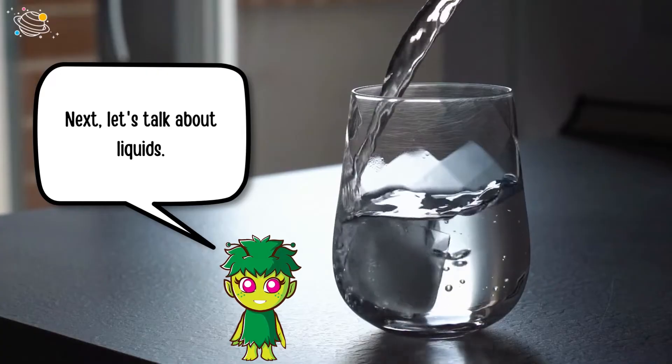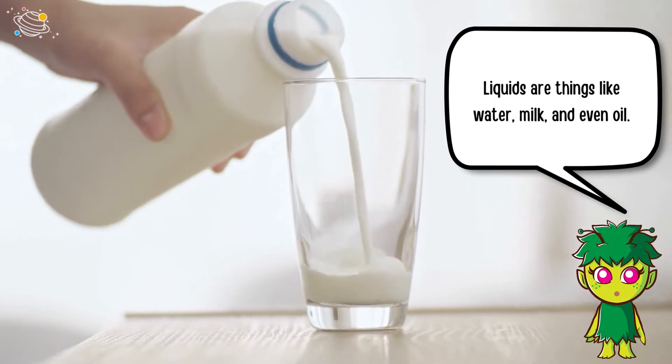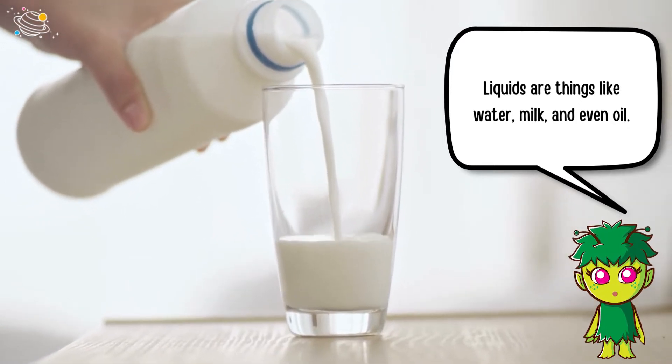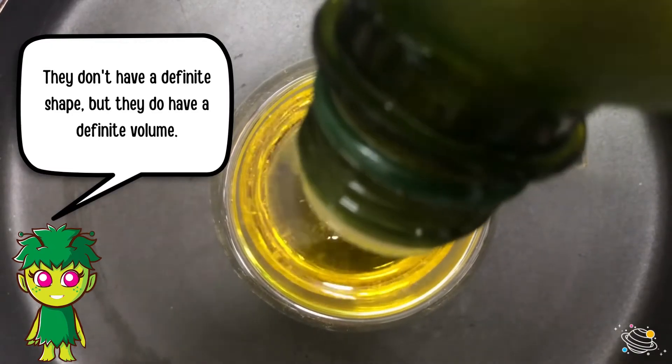Next, let's talk about liquids. Liquids are things like water, milk, and even oil. They don't have a definite shape, but they do have a definite volume.